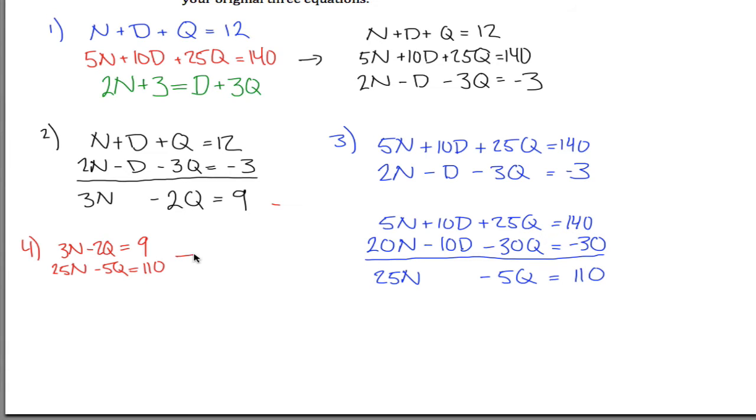One way we could do that would be to multiply the top by negative 5, and the reason you do, well, first of all, do negative 5 and then explain why. Positive 3N would change to negative 15N. Negative 2Q changes to positive 10Q, and 9 changes to negative 45.